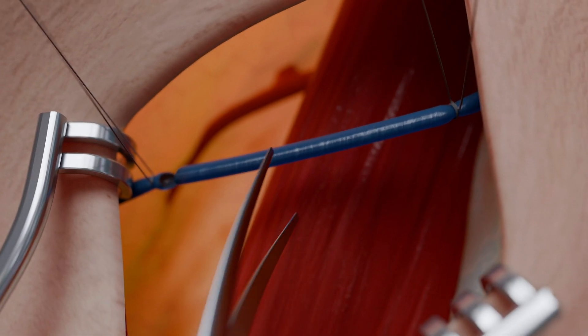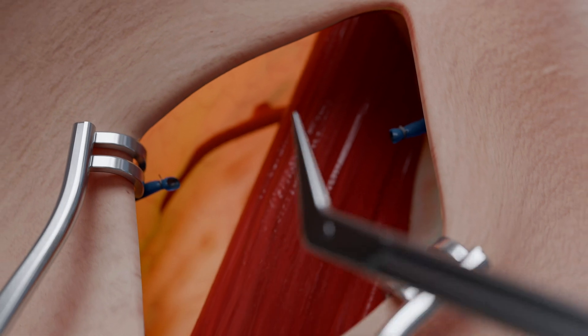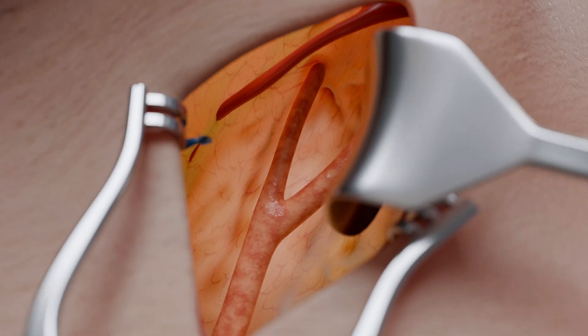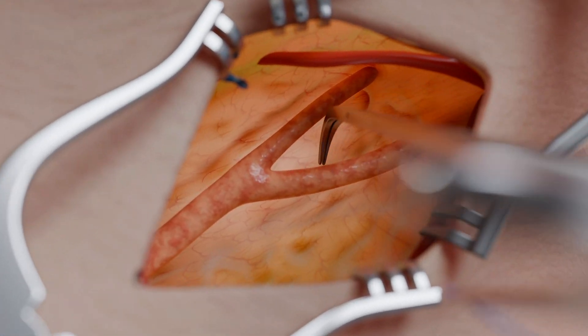Then they progress to the area where the common carotid artery branches into the internal and external carotid arteries, a common site for atherosclerotic narrowing.